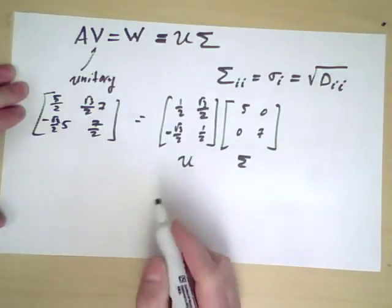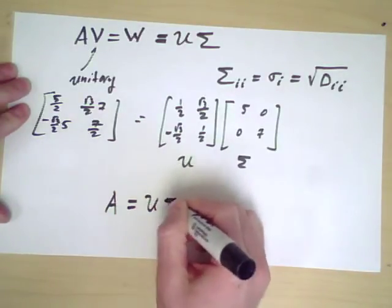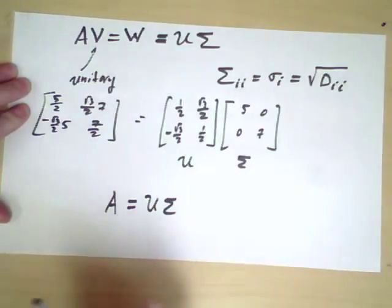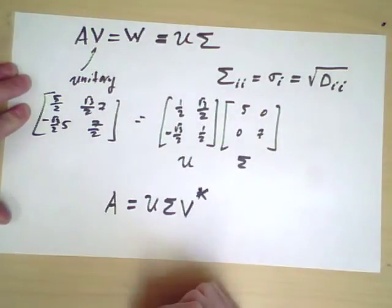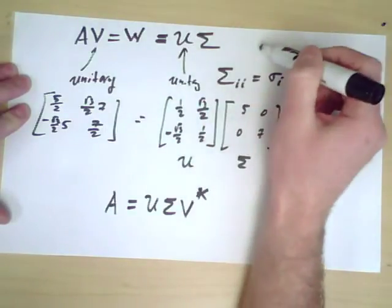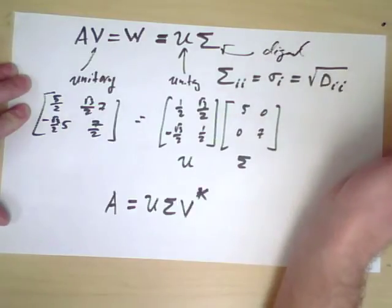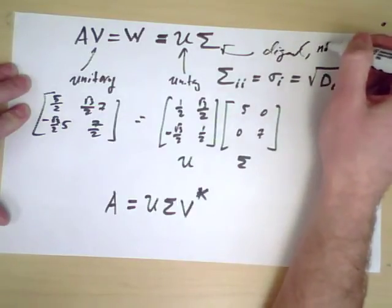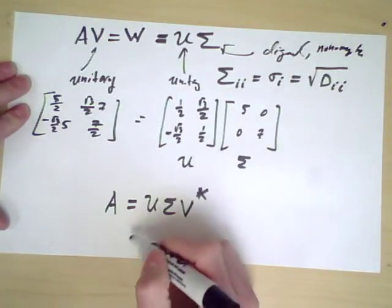So if we look at this equation, we now have exactly what we're looking for. A is U sigma, and I have to invert V, but V after all is a unitary matrix, so I have V star. So U is unitary, sigma is diagonal, in fact it's even better it's diagonal and non-negative. And this is also unitary.